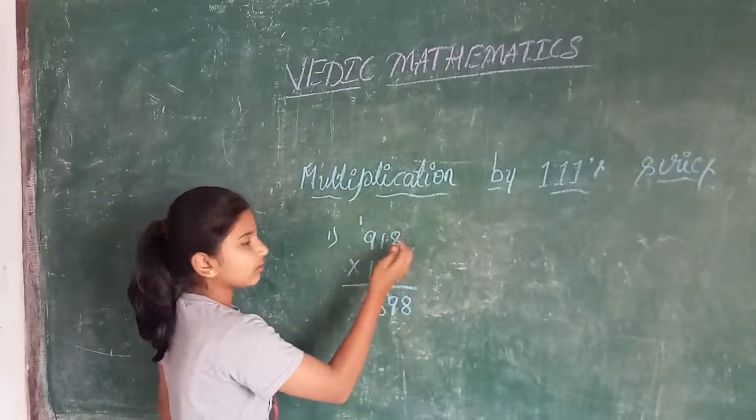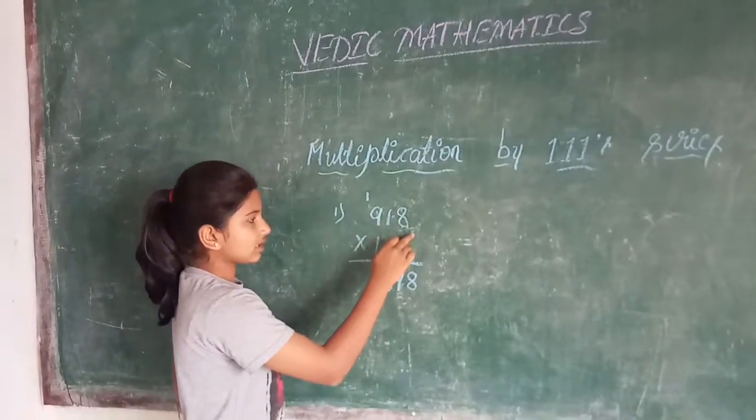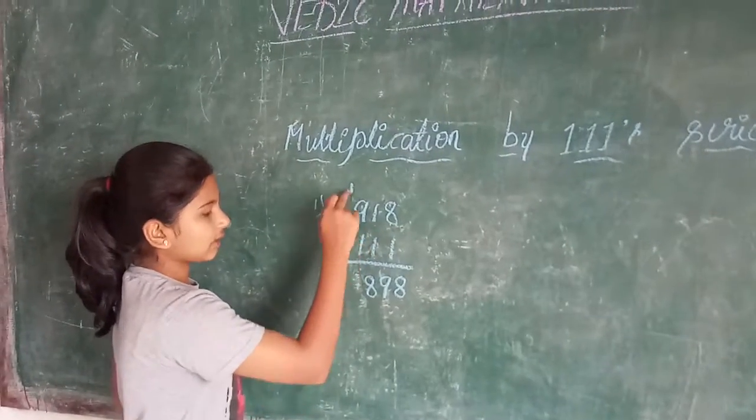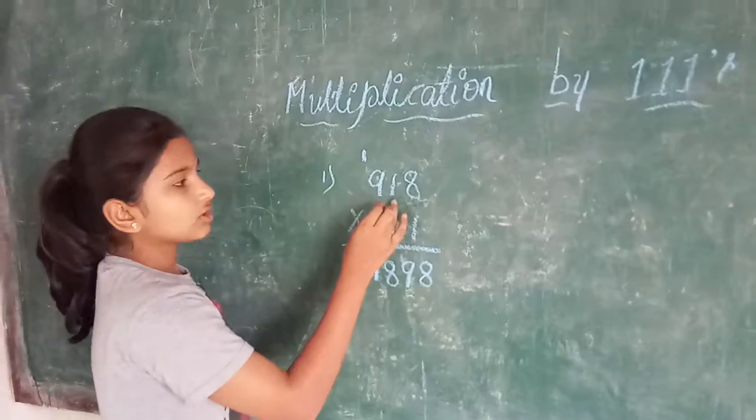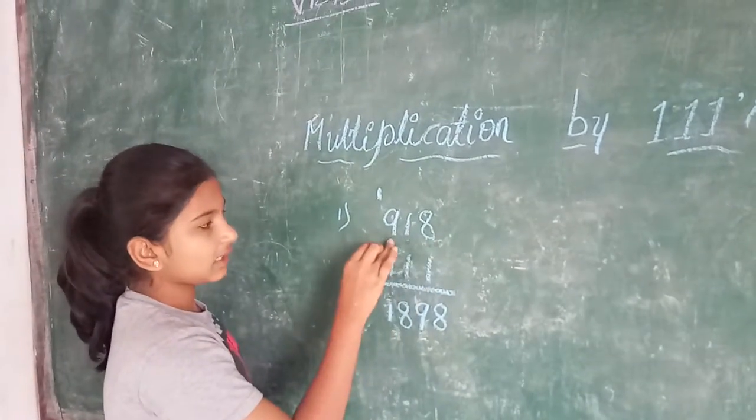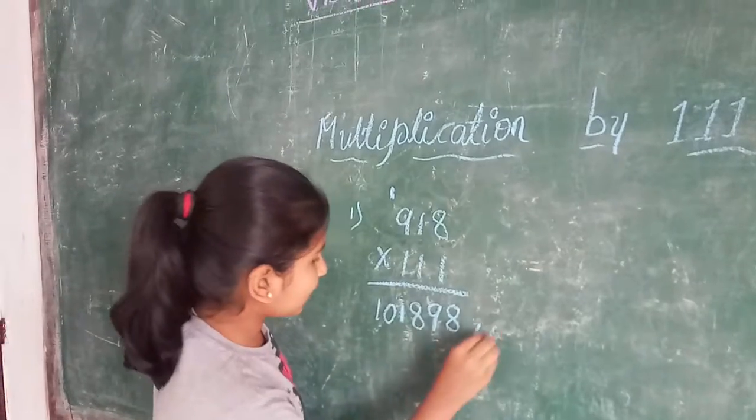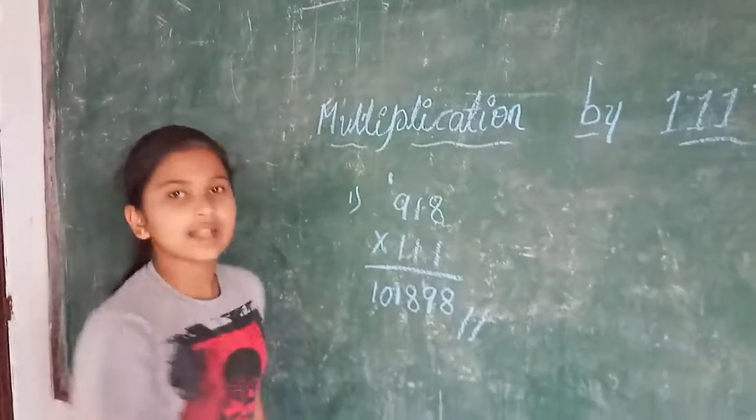Now we have to leave, we covered all the 3 digits. So we should leave 1 digit now. So 1 plus 9 is 10, 10 plus 1 is 11. 1 carry. So now we should leave 2 digits. Remaining digit is 9. 9 plus 1 is 10. So 101898 is the answer.